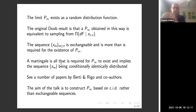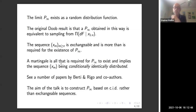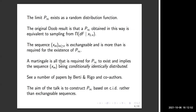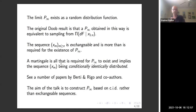The sequence is exchangeable, but that is more than is actually required for the existence of p_infinity. Doob's result is actually just a demonstration of martingales. I could also get a martingale by weakening the assumption of exchangeability and just generating a sequence which is CID — conditionally identically distributed. The pioneers of these kinds of sequences were Berti, Rigo, and co-authors and students, and there are quite a lot of articles on those types of sequences.